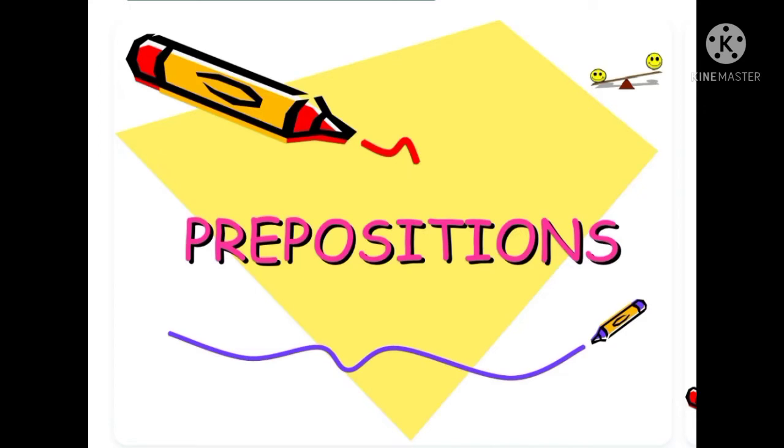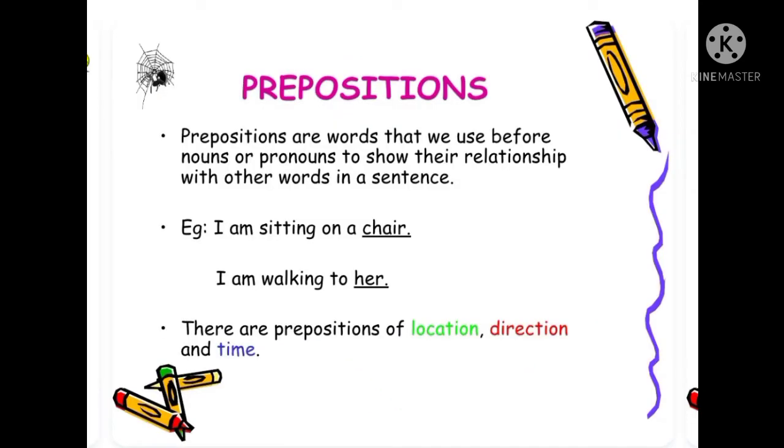Prepositions. Prepositions are words that we use before nouns or pronouns to show their relationship with other words in a sentence. Example: I am sitting on a chair. I am walking to her. There are prepositions of location, direction, and time.